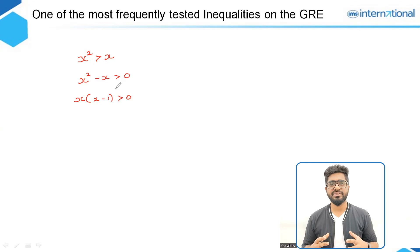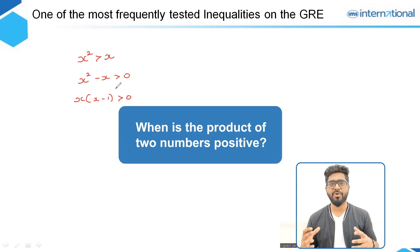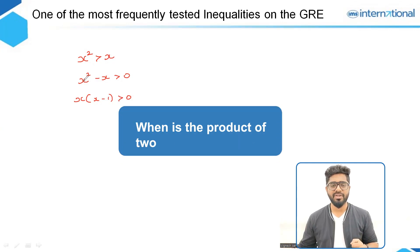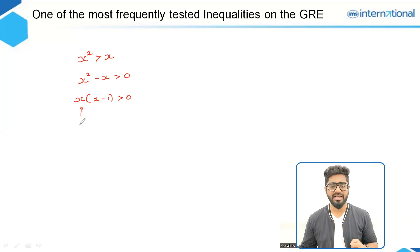Now you can think of it like this. When is the product of two terms positive? For example, you can consider this value as A and this value as B. So when is A times B positive? Now this is only positive when A and B both have same signs.